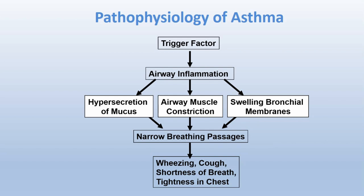Now for the pathophysiology of asthma — how does asthma develop in the body and progress to the symptoms we see in our client? The starting point of any asthma pathophysiology is the trigger factor: presence of pollen grain, a change in weather, exercise, and so on — these can trigger the asthma stages.